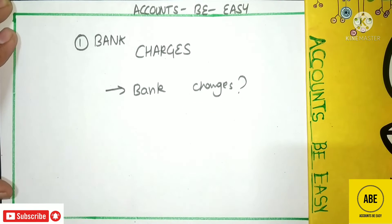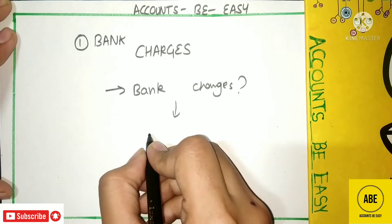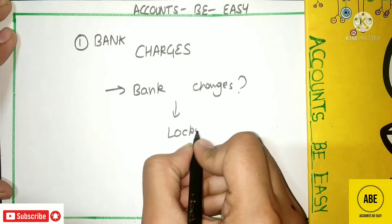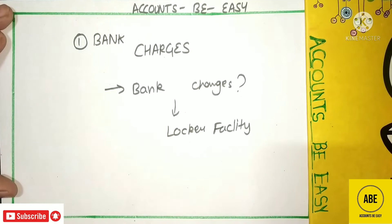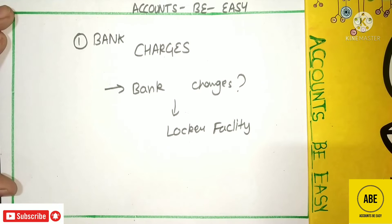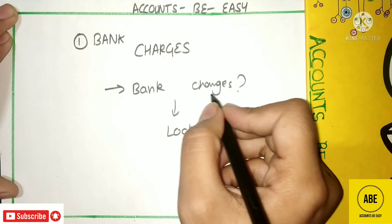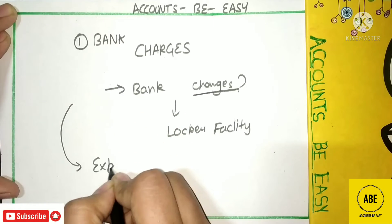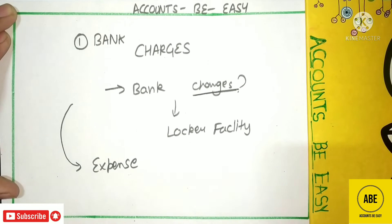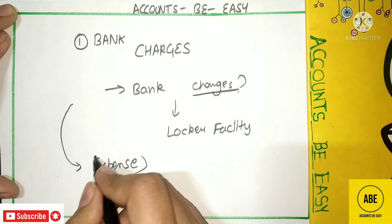Bank charges include things like locker facility. The bank provides a locker facility, also provides interest, and keeps our submitted amount safe. So all these facilities are provided by the bank, and the bank charges us for them. Those charges are our expenses because we have to pay them — so this is a loss for the business.